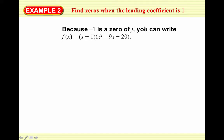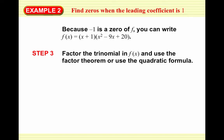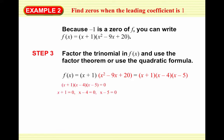We also know that x minus negative 1, or (x + 1), times (x² - 9x + 20) is equivalent to our original polynomial. Since we can factor trinomials — or if not, use the quadratic formula to find irrational or imaginary zeros — we factor: numbers that multiply to 20 and add to -9 are -4 and -5. So our three zeros are x = -1, 4, and 5.